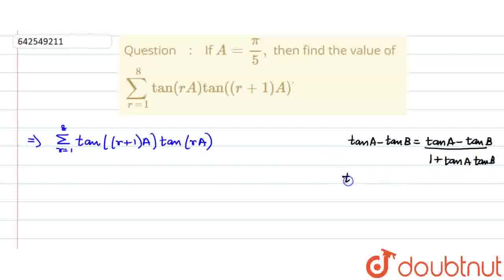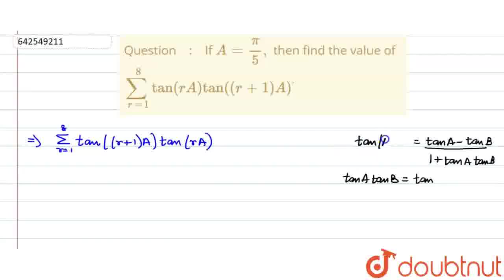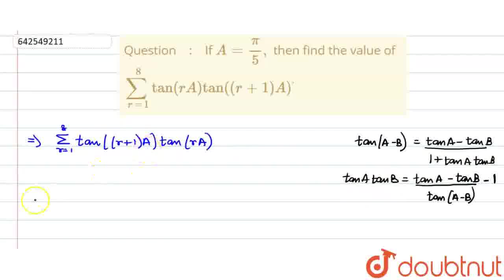From here, if we take the value of tan(a)·tan(b) out, when we cross multiply, this will come out to be: tan(a)·tan(b) equals [tan(a) minus tan(b)] divided by tan(a−b), minus 1. Using this concept, we can replace this — because here, (r+1)a is our 'a' for reference, and ra is our 'b'. So, we can change this.